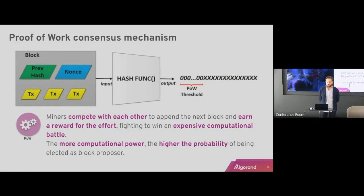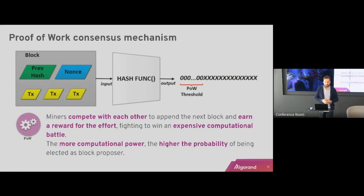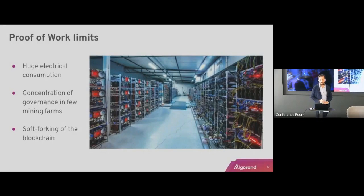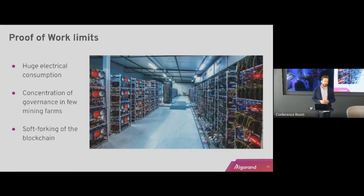The first answer when this technology emerged was proof of work, which is not sustainable. Miners compete with each other to append the next block in a very expensive computational battle. The more computational power you have, the higher the probability of being elected to propose the block. But this is very wasteful — it requires huge electrical consumption, concentrates governance in few mining farms, and is not resilient with respect to soft forking.